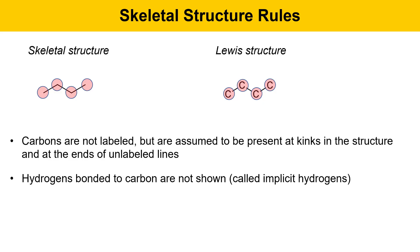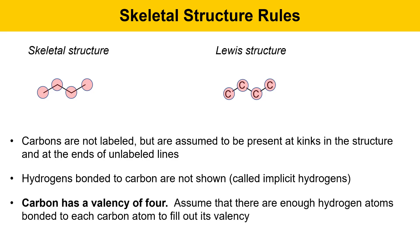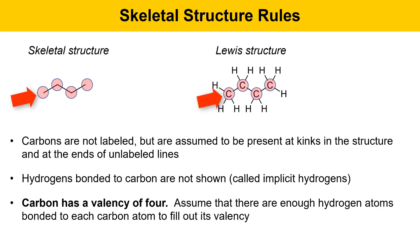Hydrogens bonded to carbon are not shown. These are called implicit hydrogens. The molecules do contain hydrogen atoms, but they're not shown in the skeletal structure. They exist and they're important, but they're left out for clarity. The way you know how many hydrogens are attached to a given carbon is that carbon has a valency of four — it makes four bonds when it's neutral. You should assume that there are enough hydrogen atoms bonded to each carbon atom to fill out its valency. For example, the carbon on the left is making one bond to a carbon on the right, so there are three valence positions left, which would be occupied by hydrogen atoms. Pay attention to every carbon in the molecule and make sure it has enough hydrogens to fill carbon's valence number of four.